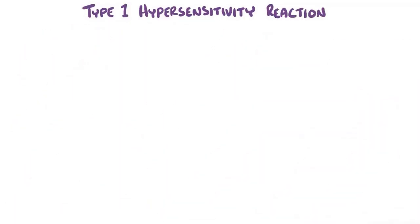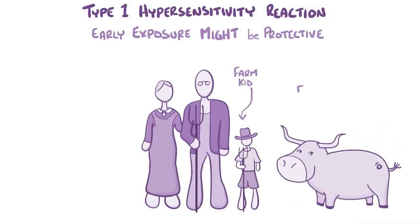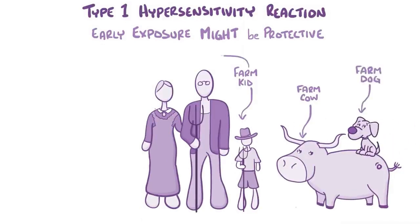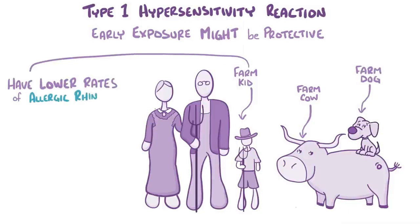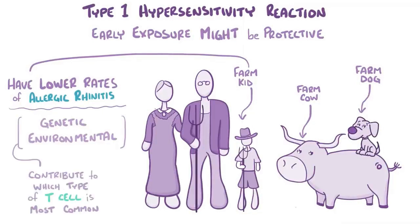Interestingly, there's evidence that early exposure to allergens might protect against type 1 hypersensitivity. For example, children who grow up on farms and have pets at an early age typically have lower rates of allergic rhinitis. It's thought that a combination of genetic factors and environmental factors like these contribute to which type of T cell group is most common, and thereby influences the overall immune response.